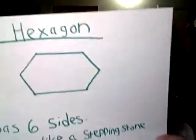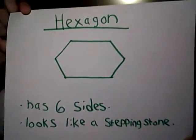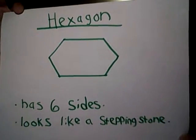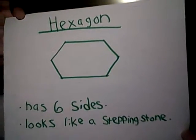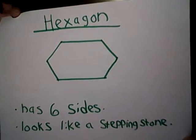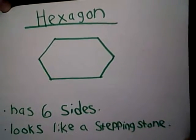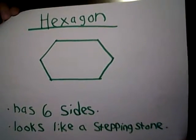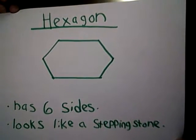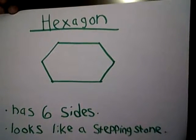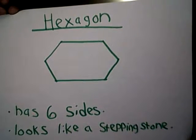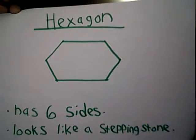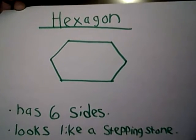The last shape that we have is a hexagon. You can see that it has six sides, and it kind of looks like a stepping stone — like you might see in a garden or a yard, like a little stepping stone to a doorway or another pathway. After your pentagon picture, you can write hexagon, which is spelled H-E-X-A-G-O-N. Go ahead and pause the video so you can trace the shape with your finger to help you be able to draw the hexagon on your piece of paper.